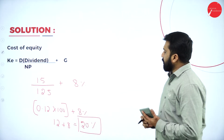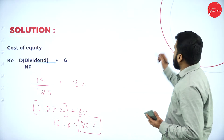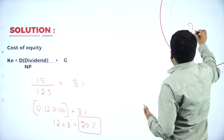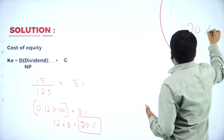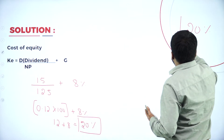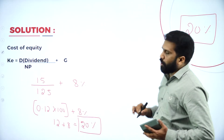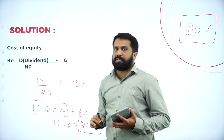The cost of equity is 20%. We have now obtained the cost of equity.